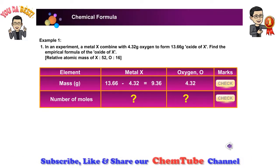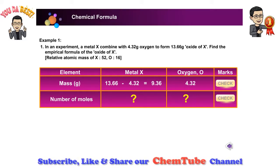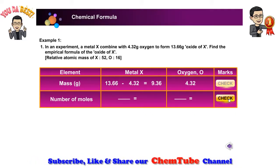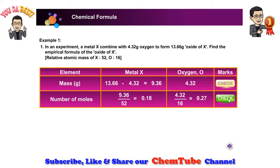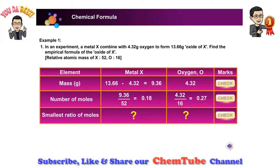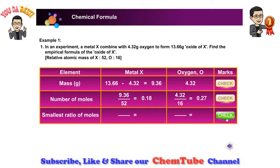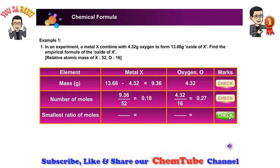Step 2: Divide the mass or percentage by relative atomic mass, AR, to find the number of moles. Type in your answer and click the check button. Step 3: Find the smallest ratio by dividing by the smallest number obtained in Step 2. Type in your answer and click the check button.